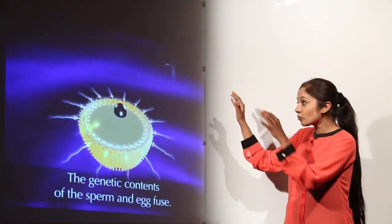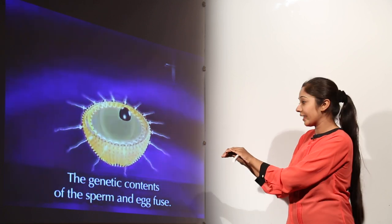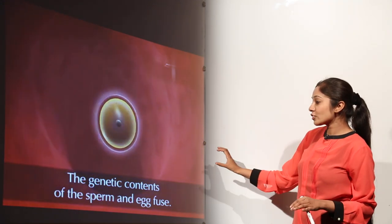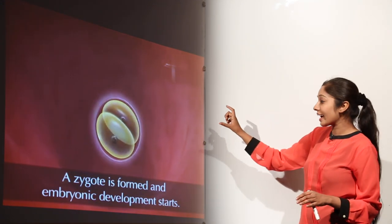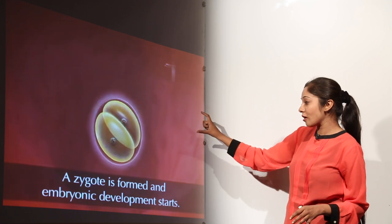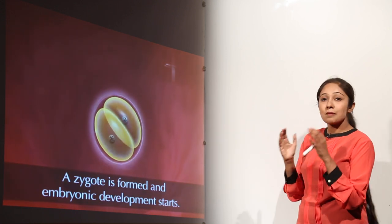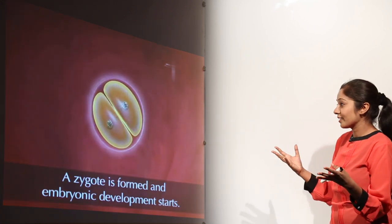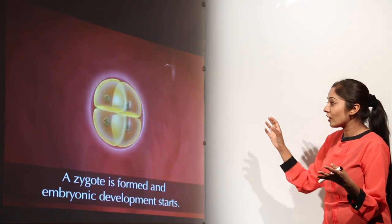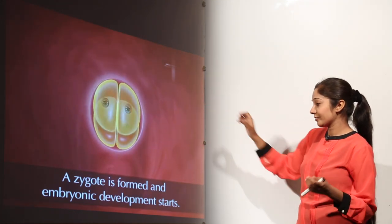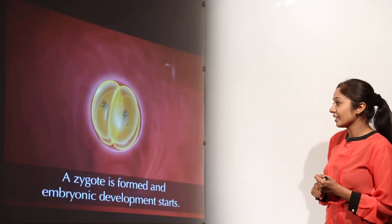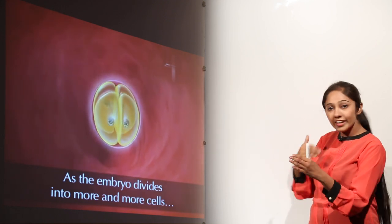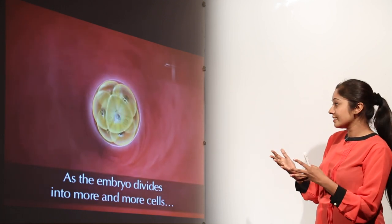This is fertilization — only one sperm can penetrate the protective outer layer of the egg. It enters inside the egg and the genetic contents of the sperm and egg fuse, forming a zygote, and embryonic development starts. We can see how cleavage is occurring as the embryo divides into more and more cells.